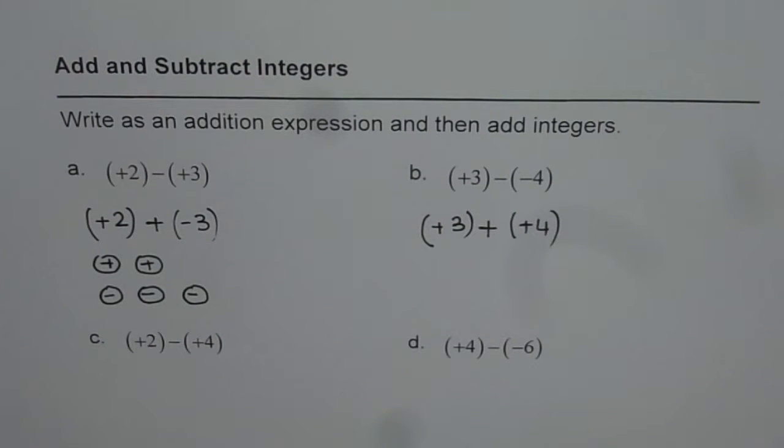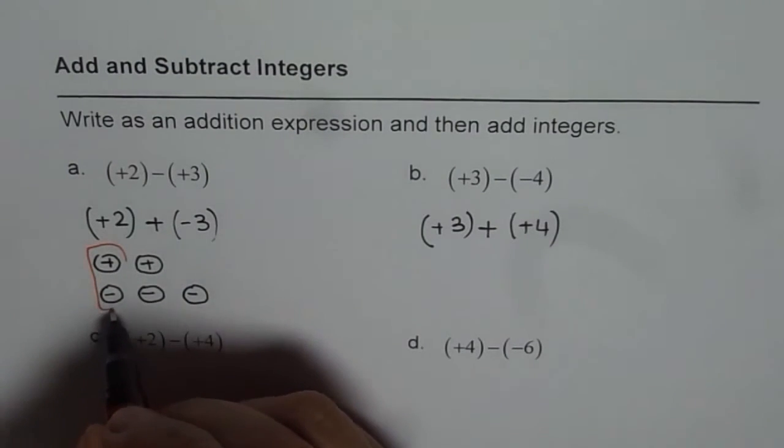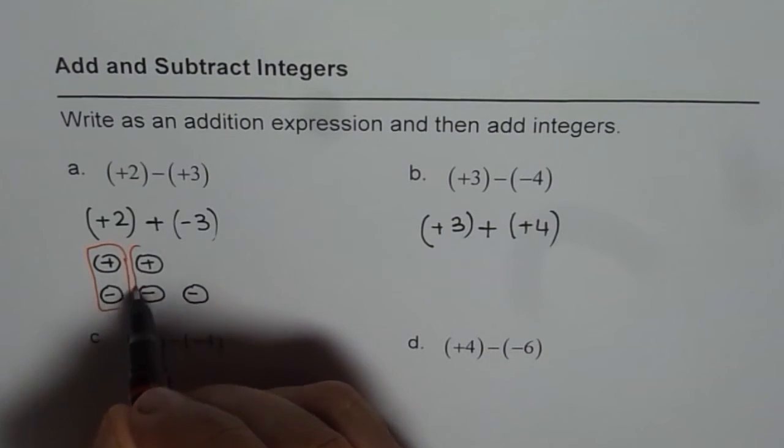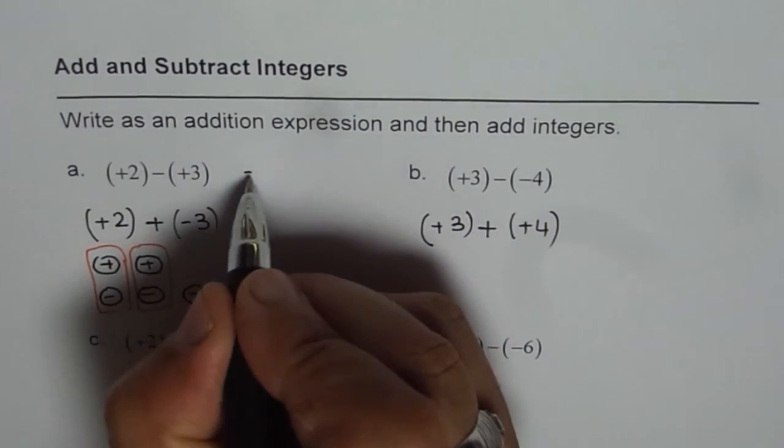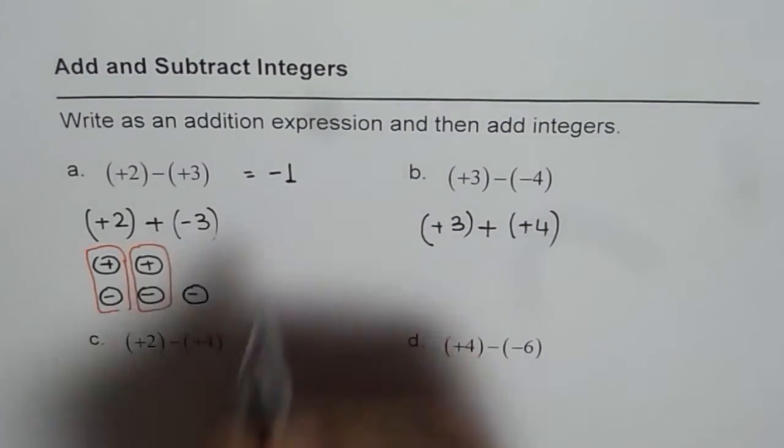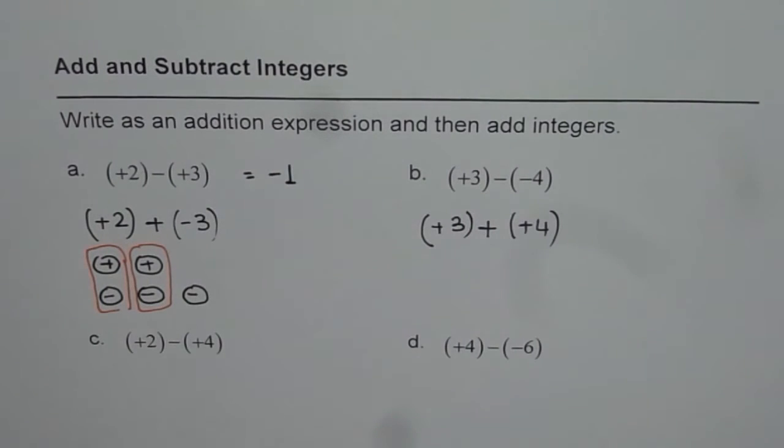Now, we will apply the zero principle. That is, plus and minus makes a zero. So, if I add this, I will get a zero. I get a zero there also. What am I left with? One negative. And therefore, this should be equal to negative 1.